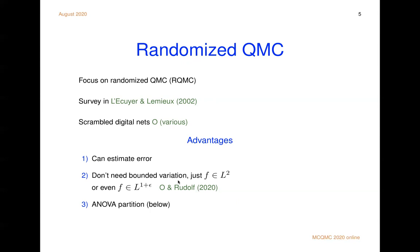Another thing I like about randomized quasi Monte Carlo, it plays nice with the ANOVA decomposition. So especially when you use scrambled nets, it plays nicely with the ANOVA decomposition.